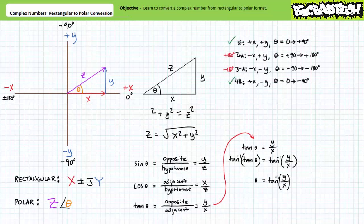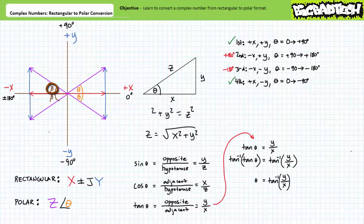Note there is some trickery with angle calculations because the inverse tangent function solves for the angle inside the small right triangle formed by the real and imaginary components. Inside the first and fourth quadrant, no modification is necessary. However, for answers in the second quadrant, we must add 180 degrees to the result of the inverse tangent. For answers in the third quadrant, we must subtract 180 degrees.